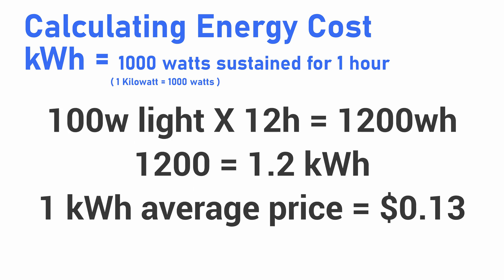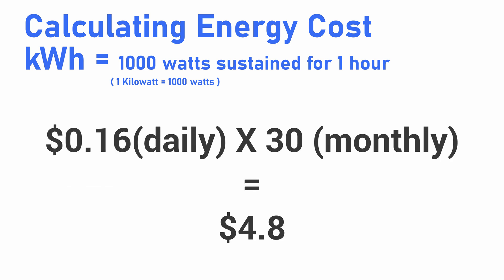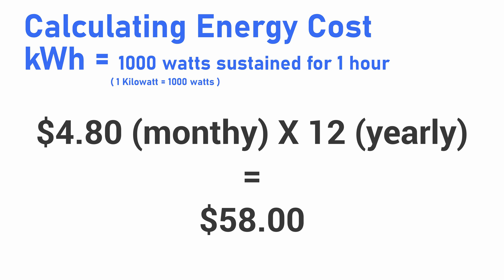In my scenario I have a 100 watt grow light and I'm running it for 12 hours a day, which means we're going to hit about 1.2 kilowatt hours worth of usage. If we multiply our 1.2 kilowatt hours times our 13 cents we'll get 16 cents per day. Now that we have our daily rate of 16 cents we can multiply that by 30 to get our monthly rate, which is $4.80. I am rounding a little bit, so if it doesn't match up exactly on your calculator that's why. And finally to get our yearly cost, we take our $4.80 and multiply it by 12 because there are 12 months in a year, and that gets us to $58.